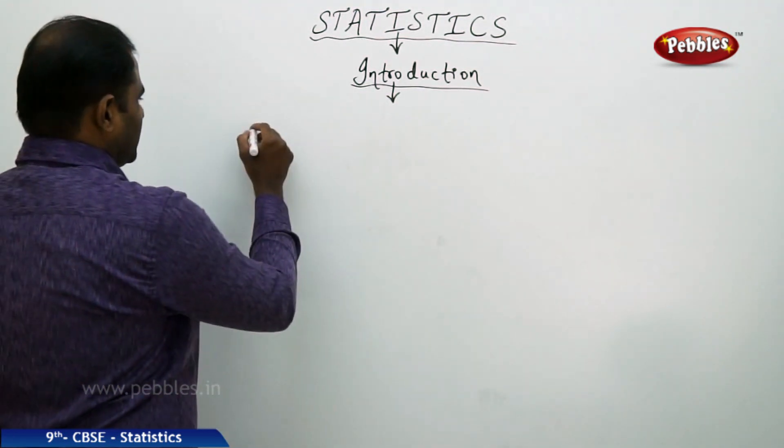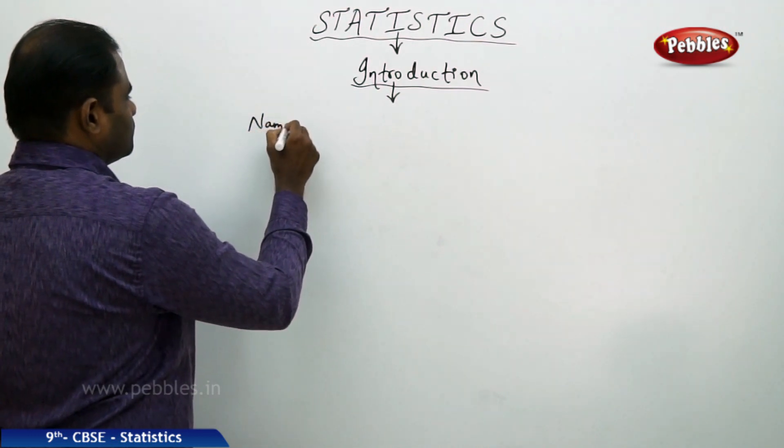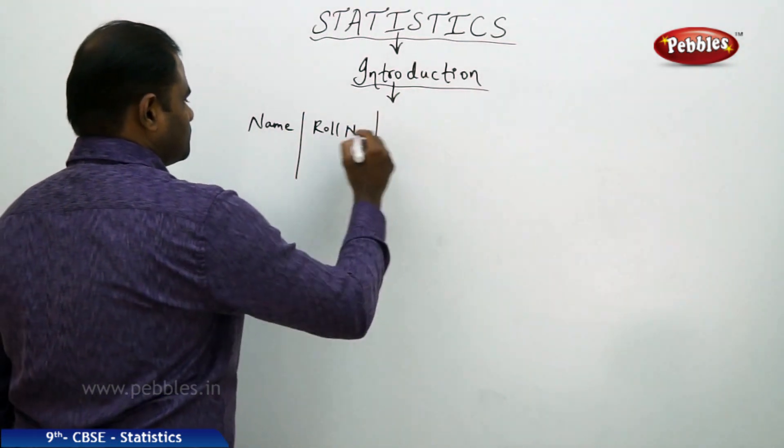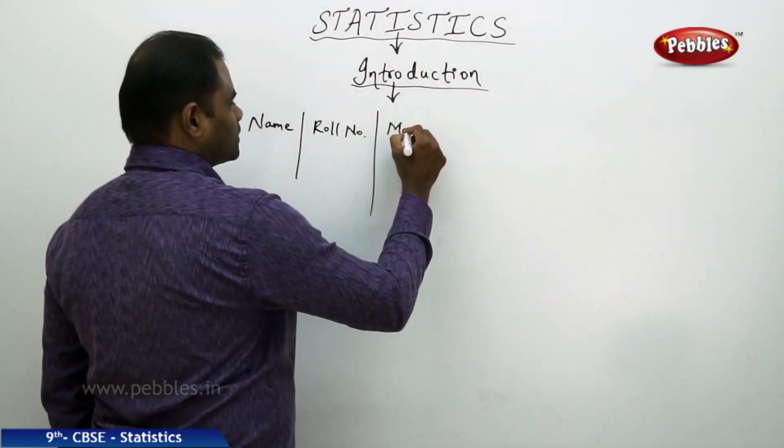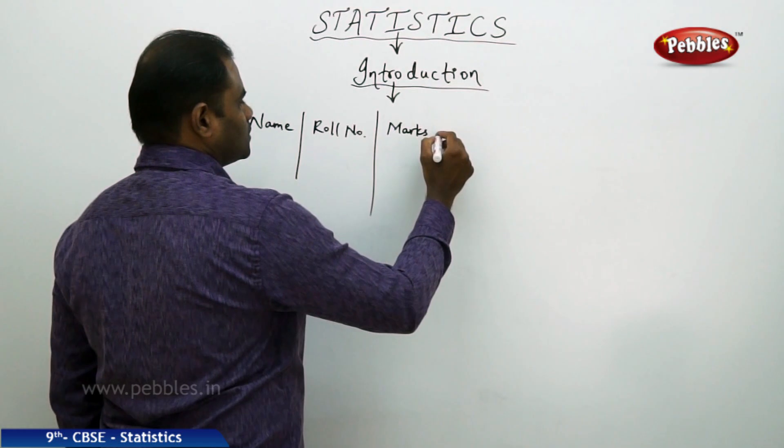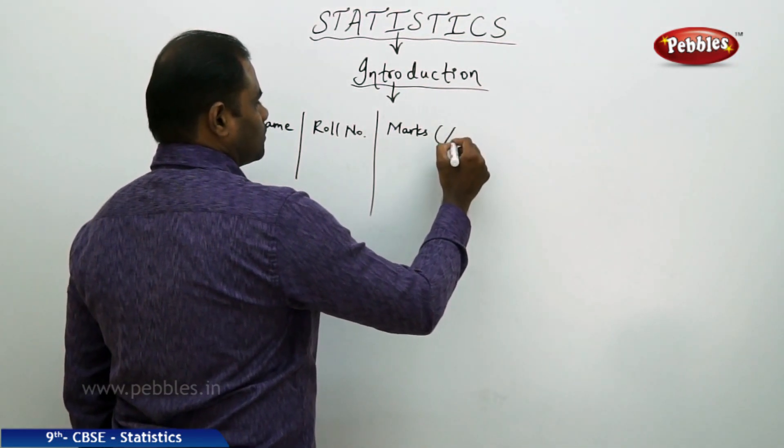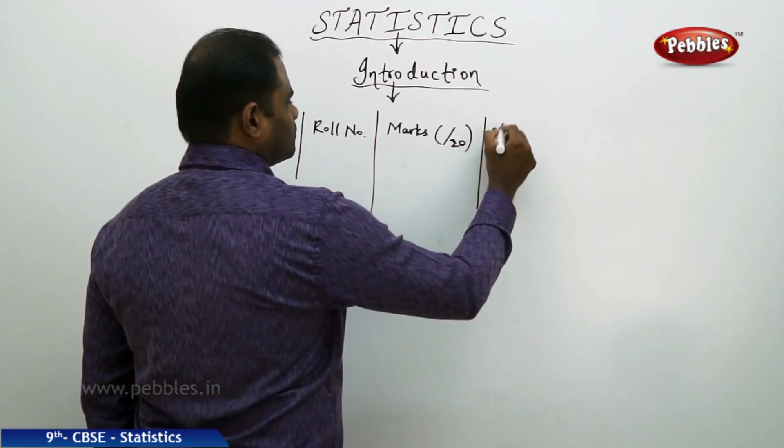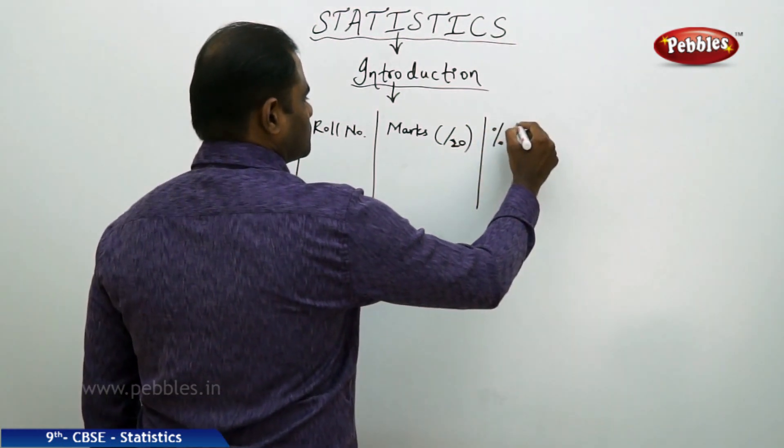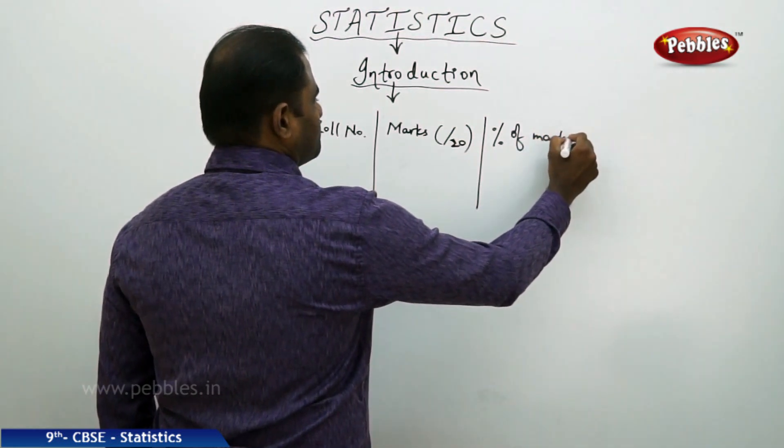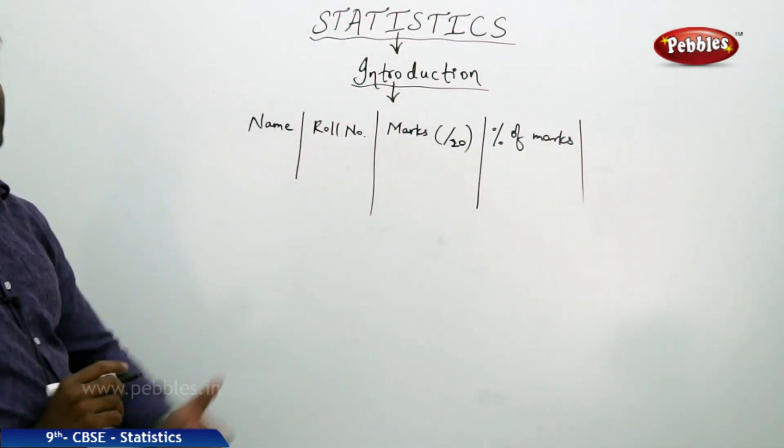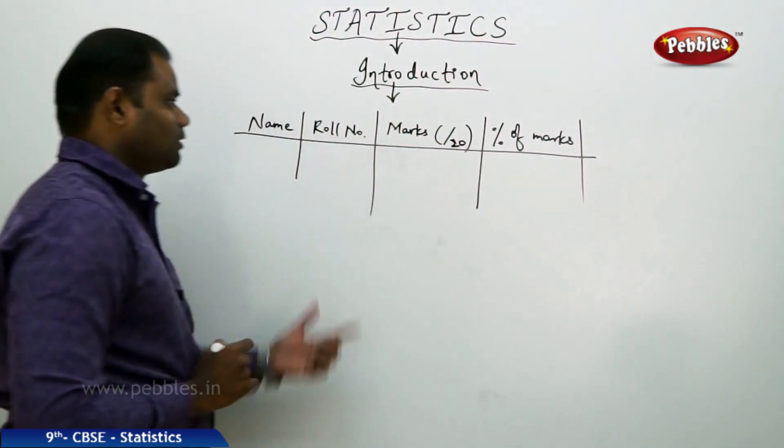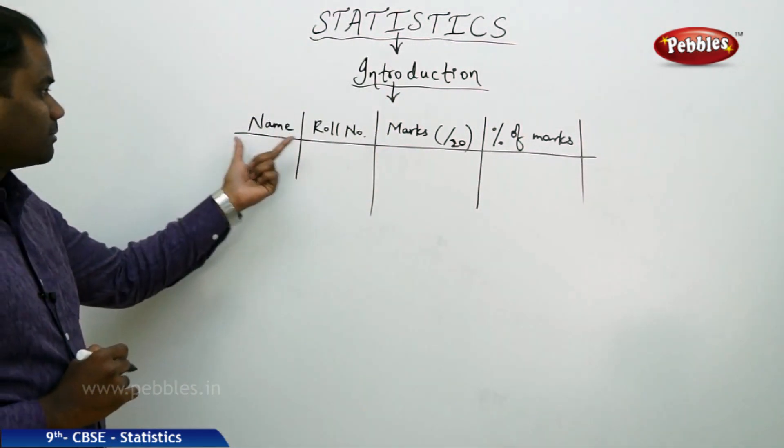For example, I have the name, the roll number, marks calculated out of 20, and then the percentage of those marks. Imagine a teacher is trying to make the different statistics, the data of different collection of marks and their students' names and roll numbers.